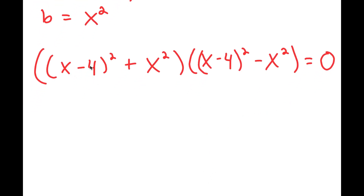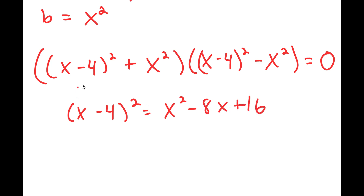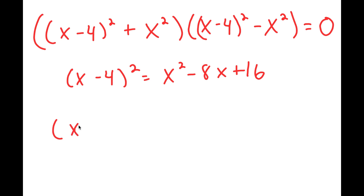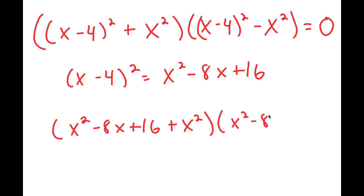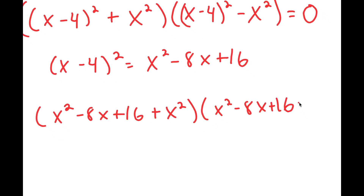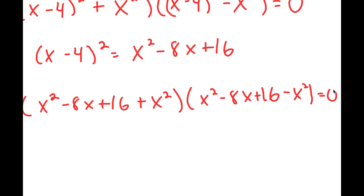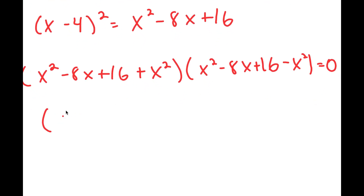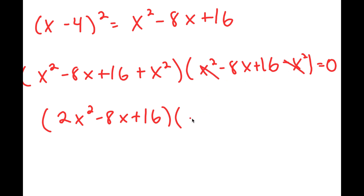From here, I'm going to expand x minus 4 squared. x minus 4 squared is equal to x squared minus 8x plus 16. So I get x squared minus 8x plus 16 plus x squared, times x squared minus 8x plus 16 minus x squared, is equal to 0. x squared plus x squared is 2x squared, so I get 2x squared minus 8x plus 16 times negative 8x plus 16 is equal to 0.